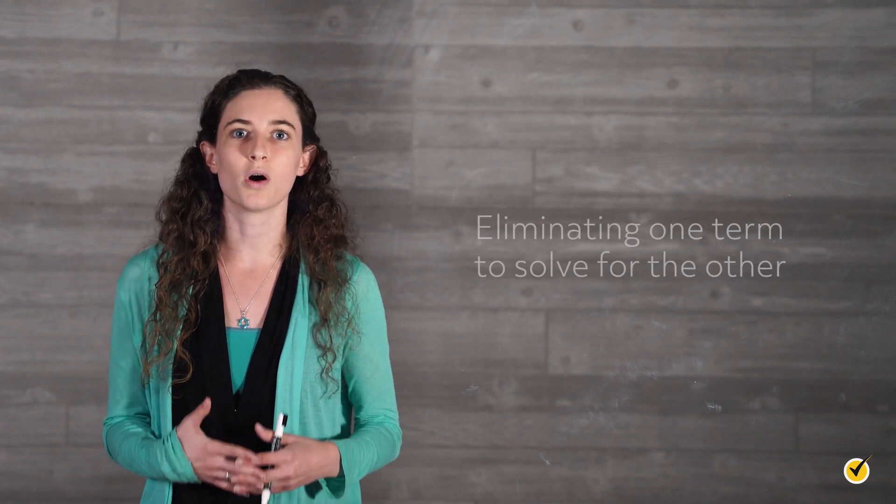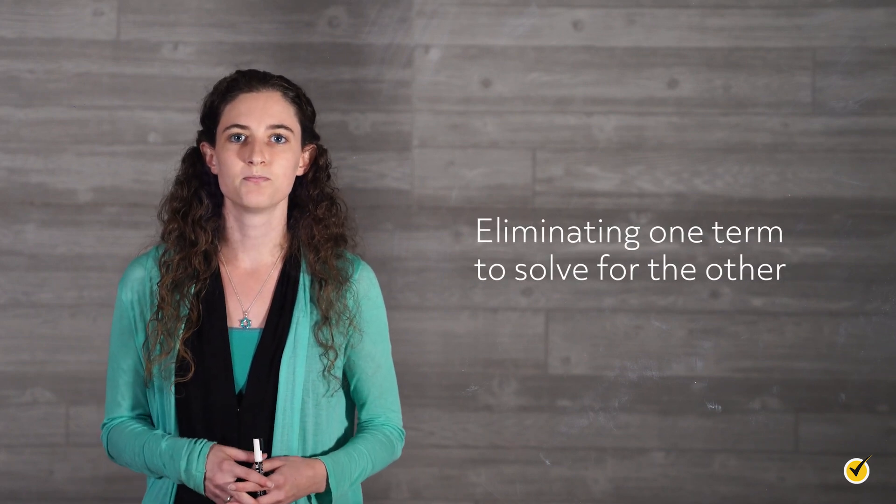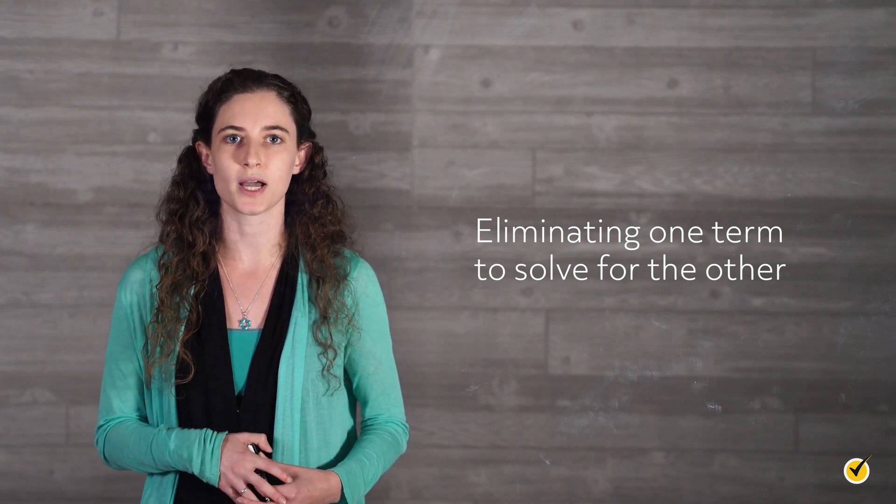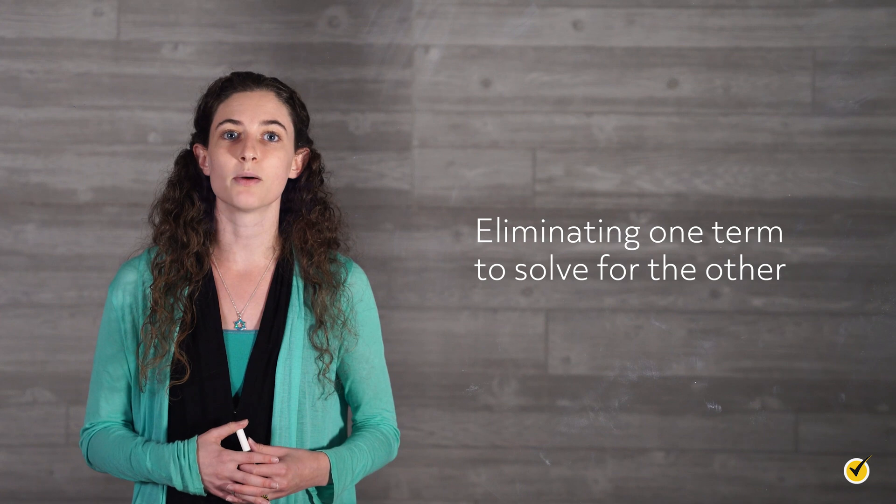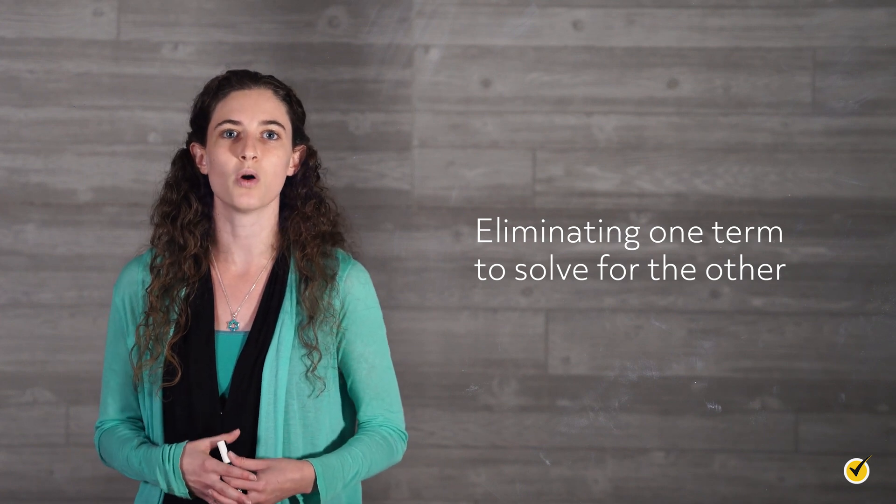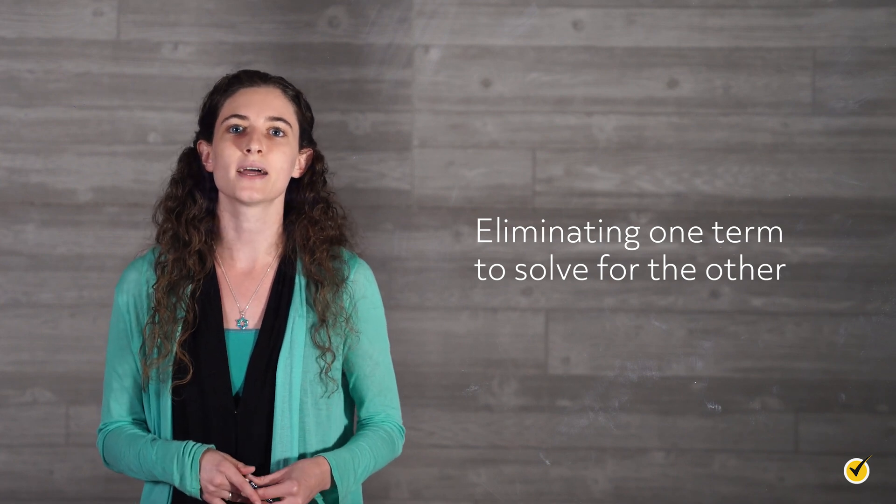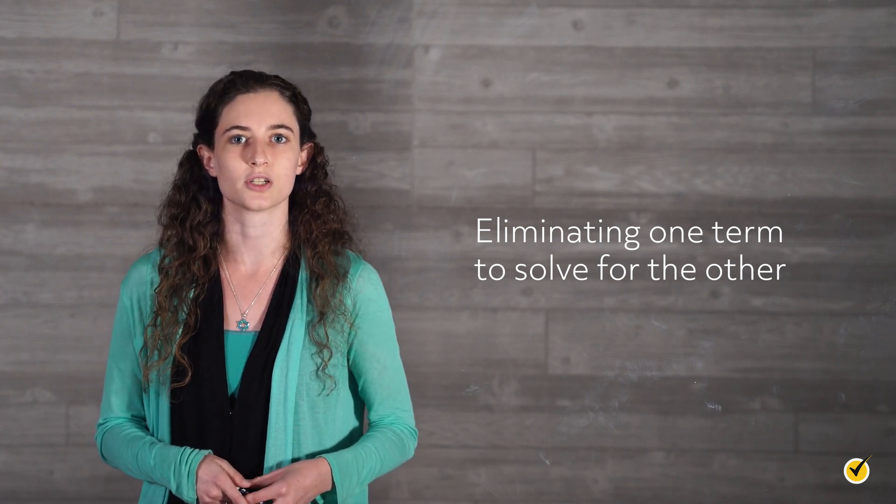The elimination method involves exactly what it sounds like, eliminating one of our terms to solve for the other. If we are using standard linear equations in the form ax plus by equals c, we want to find a number or numbers to multiply one or both of our equations by to get rid of the x term or the y term by adding or subtracting the two equations.